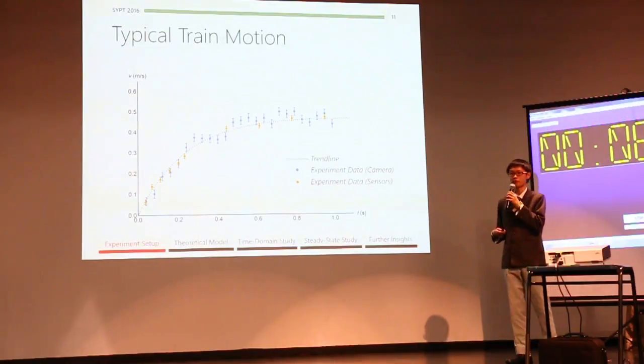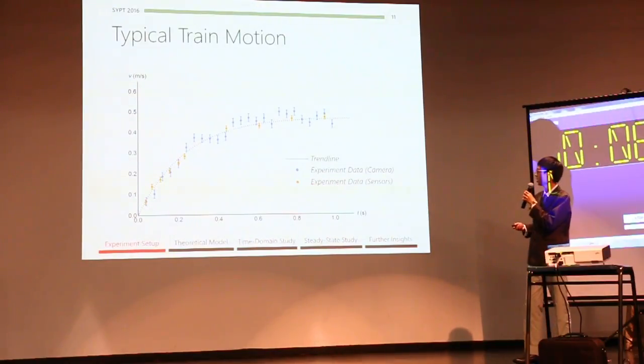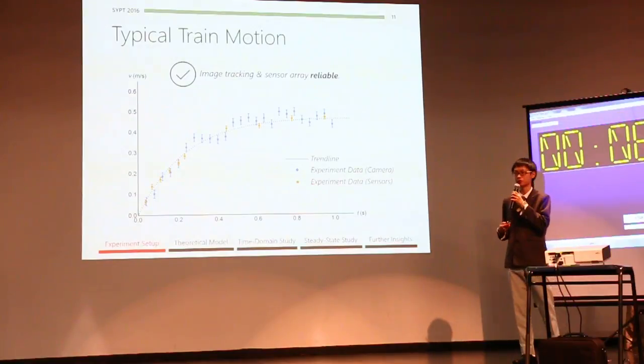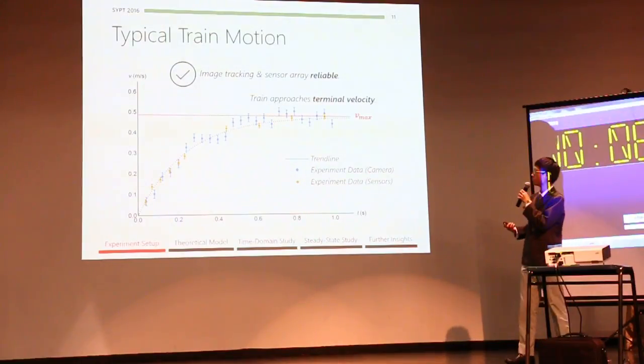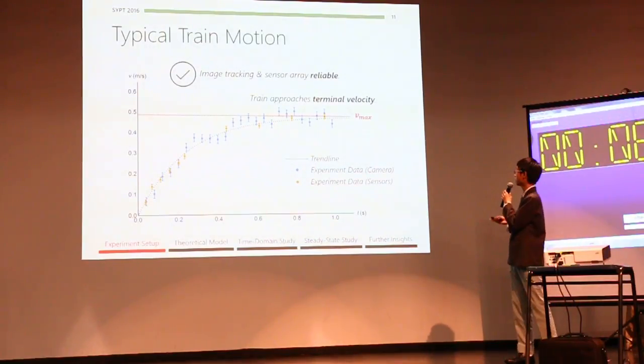So here we see a typical graph of measured train velocity against time, and we note firstly that our results from our camera and our data sensors are consistent, and this tells us that our tracking technique is reliable. Furthermore, we note that our train approaches a terminal velocity near the end of our run.